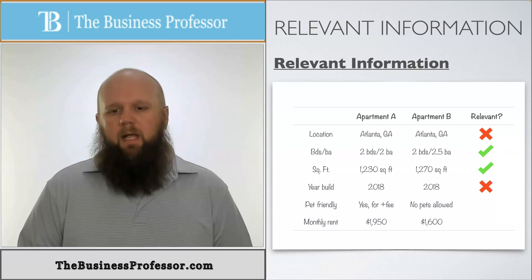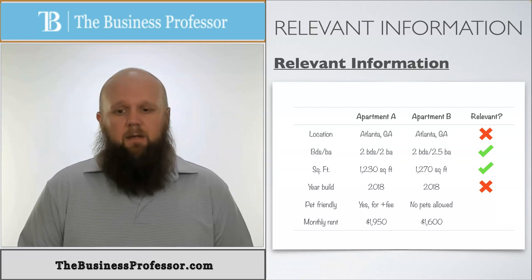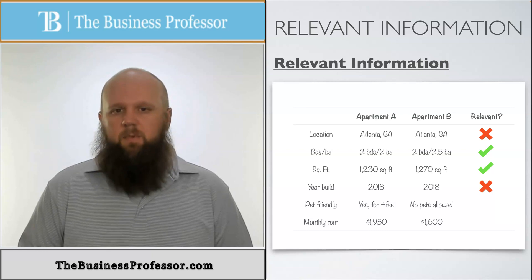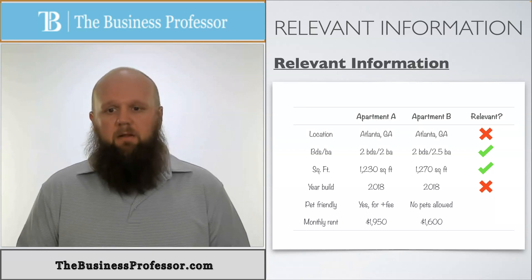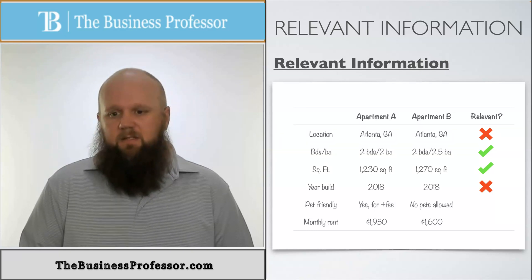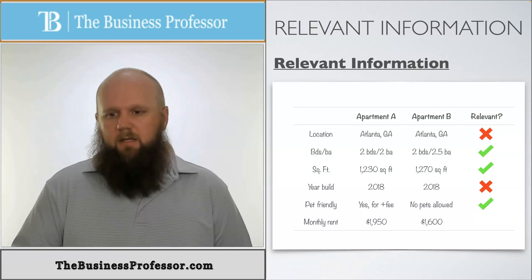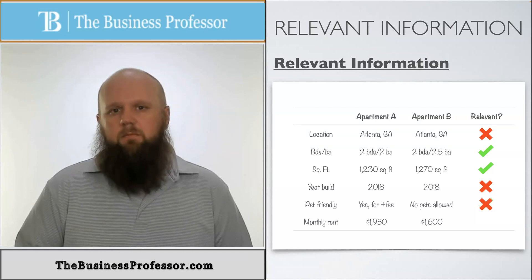Pet friendly: apartment A is pet friendly, but they do it for a fee, whereas apartment B has no pets allowed. Now this one's tricky because obviously it depends on the situation — this could be relevant or irrelevant. If you're not a pet owner, then this is irrelevant because it doesn't mean anything. If you are a pet owner, then it is relevant. So it really depends on your situation — relevant if you're a pet owner, not relevant if you're not.